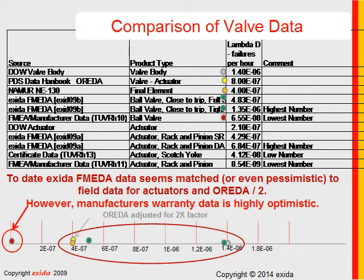A question came in: are operating conditions considered in FMEDA results? Yes, to a certain extent. We have seven different operational profiles which list a whole series of environmental variables based on international standards. The FMEDA component data is published as a function of the operational variable, so for any given part we would have seven different failure rates accounting for seven different operational profiles.